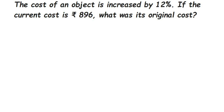Hey everyone, this is a question from Comparing Quantities, and it's a really important one. The question is: the cost of an object is increased by 12 percent. If the current cost is 896, what is the original cost? After the increase, the current cost is 896 rupees, and we have to find the original cost — the price before the increase.